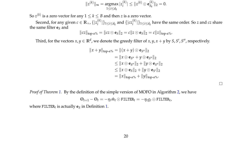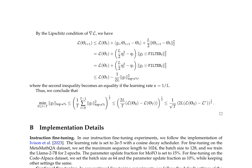The proof of Theorem 1 relies on the definition of ‖·‖_top-α% and the properties of the filter s. The MoFo update rule is written as θ_{t+1} − θ_t = −α_t · m ⊙ filter_t, where filter_t is equivalent to filter s. The authors also define a greedy filter used to select the top alpha percent of entries in a vector, showing it satisfies norm properties. A supporting lemma confirms that ‖·‖_top-α% is indeed a valid norm, used in the proof of Theorem 1.